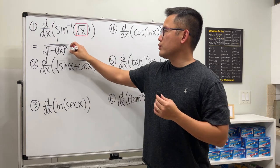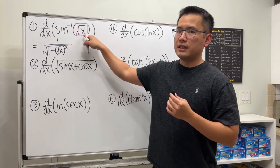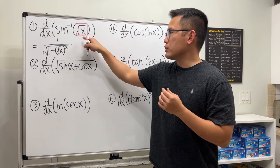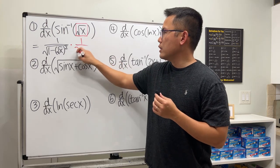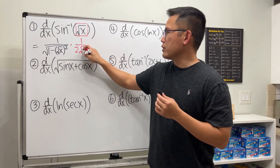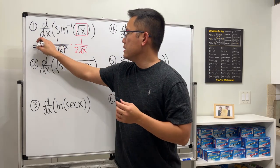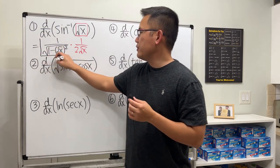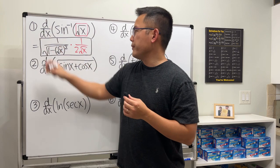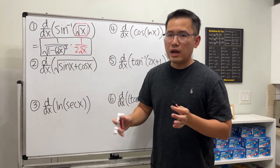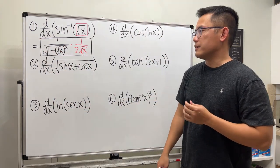Because of the chain rule we multiply by the derivative of the inside. The derivative of square root of x is 1 over 2 square root of x, and that's it. As I said, this video will focus on the chain rule only, and later we'll focus on how to simplify the algebra.